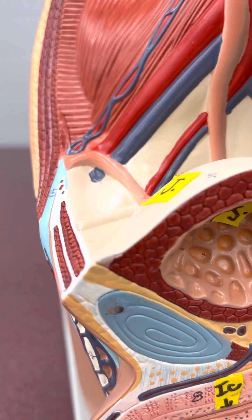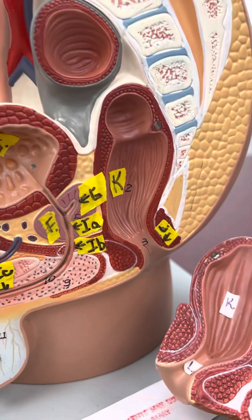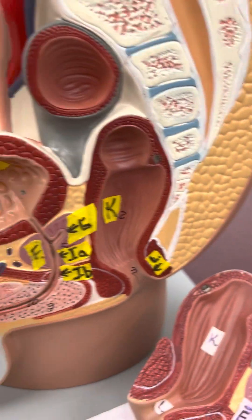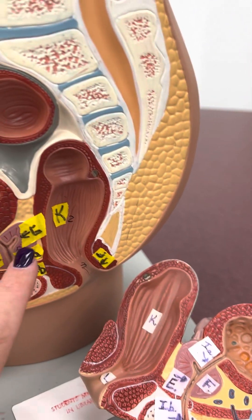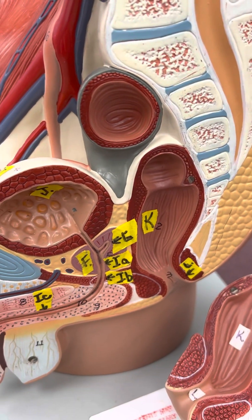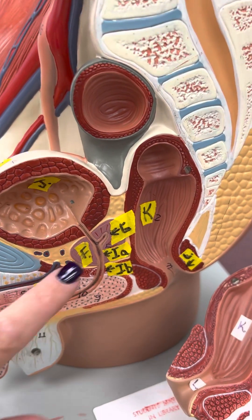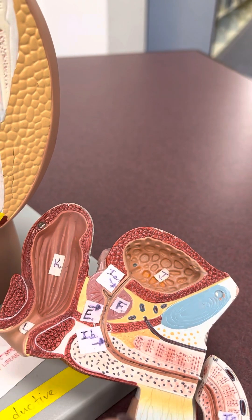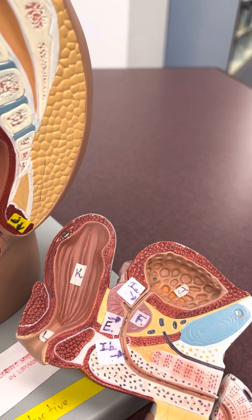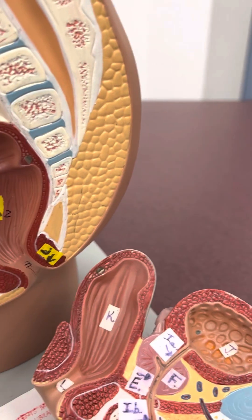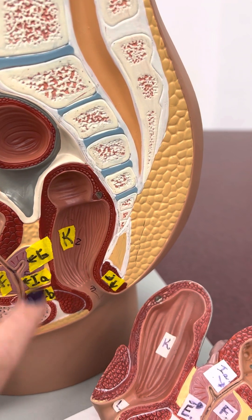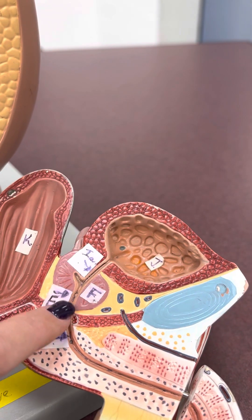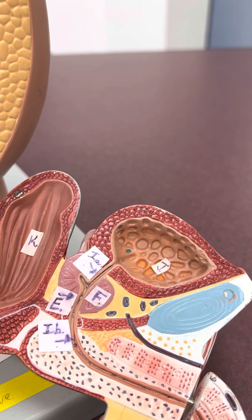E is on both sides. This organ here is the prostate. So after the prostate, you have the ejaculatory duct — F — leaving the prostate, the ejaculatory duct.